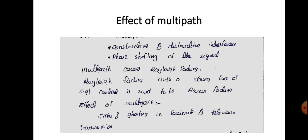The signals may travel from the transmitting antenna to the receiving antenna through different paths and will be received at the receiving antenna at different times. So the same signal is received at different times, which is the cause of doubling of the picture. It may appear like ghosting, which is why we call it ghosting in television transmission.